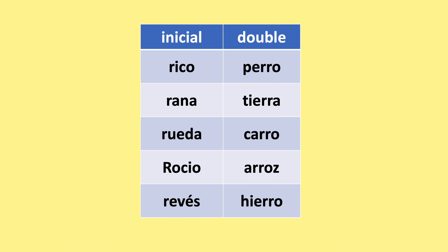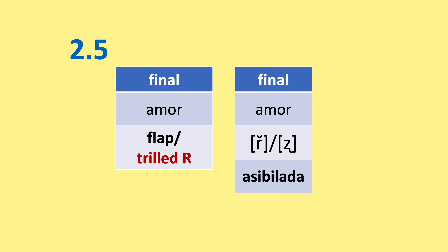Sometimes when people speak very quickly, or after certain letters, some people would pronounce it like a 'sh' sound. In some regions, instead of saying amor with a trilled R, they'll say their version — the asibilada — which would be 'zhi', so they would say amor with that asibilada sound.